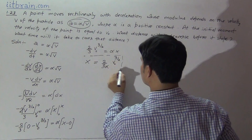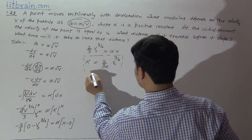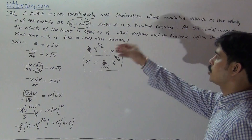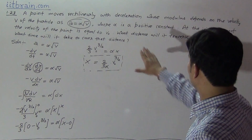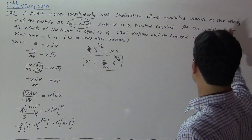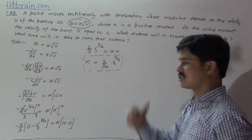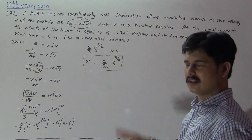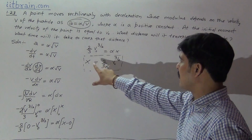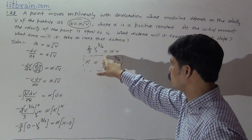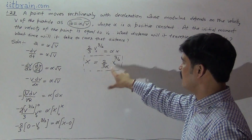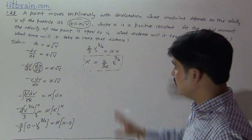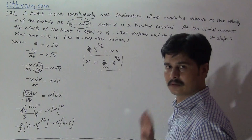This is the distance at which the particle stops. The distance travelled by the particle will be 2 by 3 alpha times v₀ to the power 3 by 2. Before it stops, it travels this much distance.